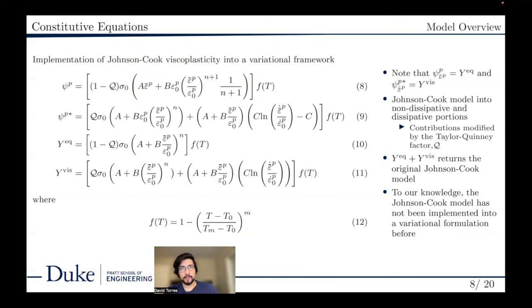The Johnson-Cook model is implemented in a variational fashion. The aforementioned flow stresses are derivatives of the energetic and dissipative portions of the plastic energy. Here, psi p represents the energetic volumetric plastic energy and psi p represents the dissipative volumetric plastic energy. These values are derived from the flow stresses which are derived from the original Johnson-Cook model.